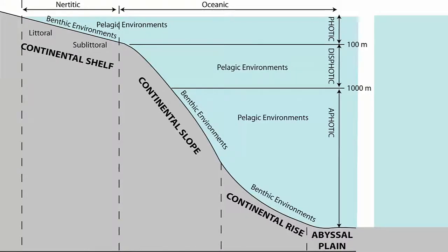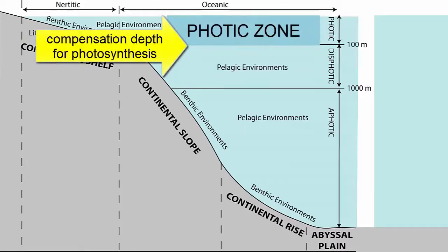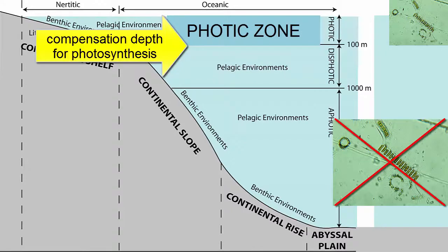Another important effect of light availability is that photosynthesizing organisms can live only in areas of the ocean with at least one percent of surface light. We call this depth the base of the photic zone and the compensation depth for photosynthesis. Below this depth, though some minimal light remains, there is not enough to produce sufficient sugar to meet the photosynthesizing organism's own daily energy needs, so no photosynthesizing autotrophs can exist below this depth.